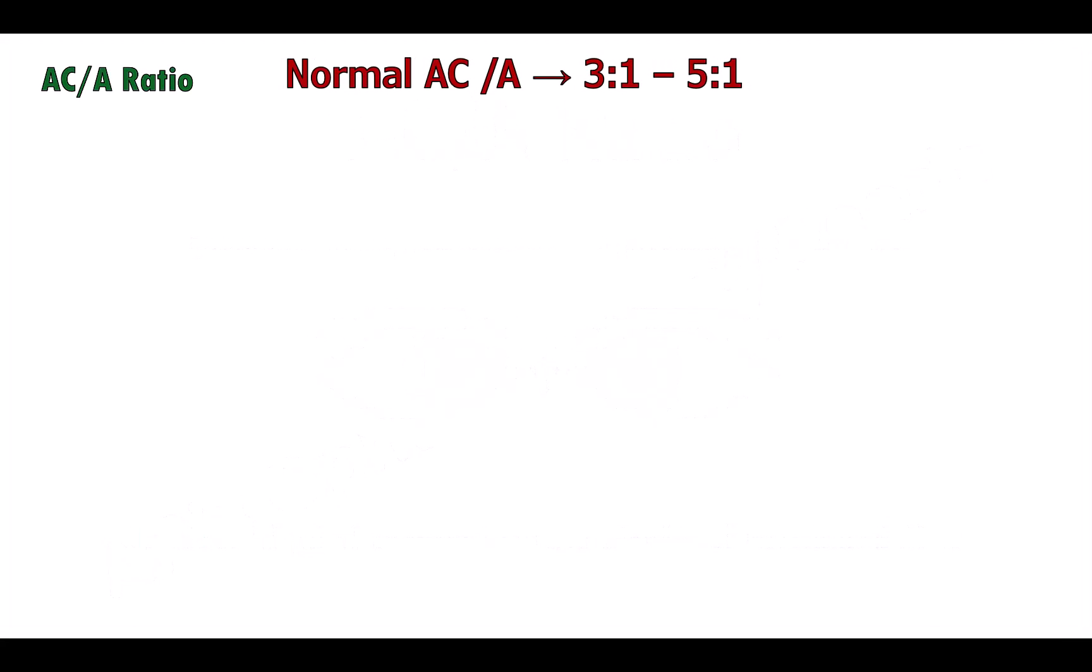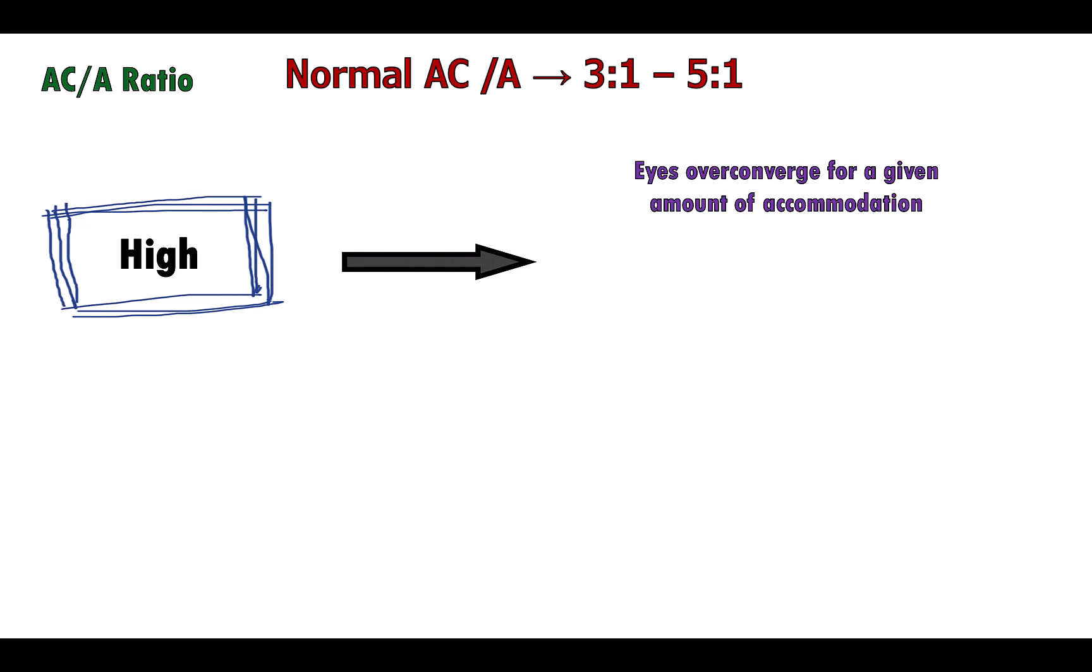The normal AC/A ratio is 3 to 5 prism diopters per diopter of accommodation. A high AC/A ratio indicates that the eyes over-converge for a given amount of accommodation, which results in an esotropic shift for near.